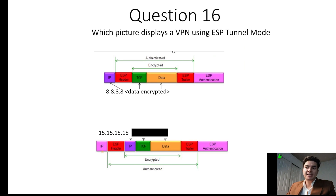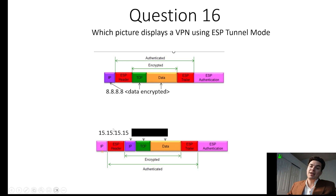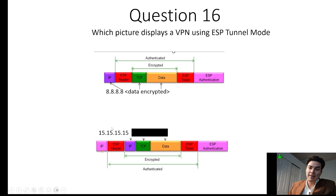Question 16. Which picture displays a VPN using ESP tunnel mode? A VPN is a virtual private network, a technology that allows you to create a secure and private network connection over the internet. In the first image we have transport mode, where the data is encrypted but the IP address is visible to everyone as it travels across the internet. In tunnel mode, all the data is encrypted and a new IP address is placed in front of it, so anyone intercepting the message only sees the outer IP address, which is stripped when it reaches the destination router.